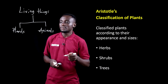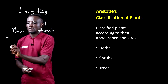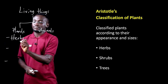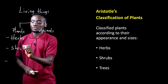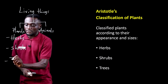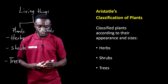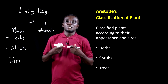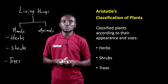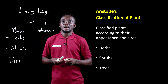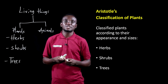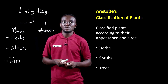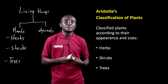The plants he grouped further into three: they were either herbs, shrubs, or trees. This classification was as a result of their appearance and size, so differences in external appearance and size largely determined whether they were herbs, shrubs, or trees.